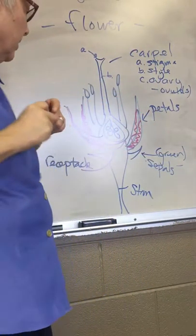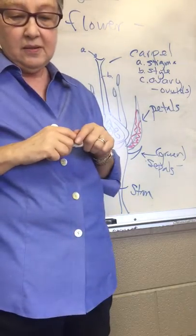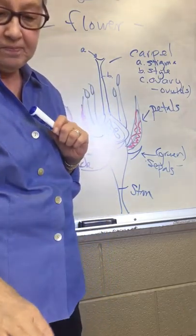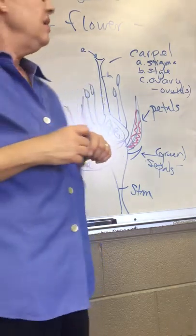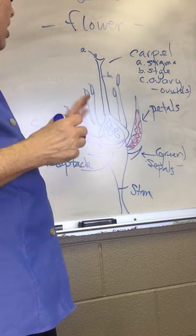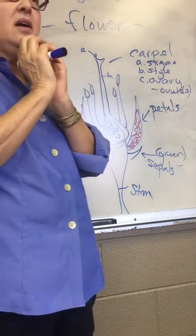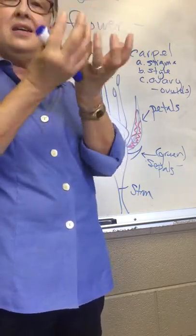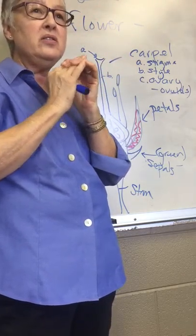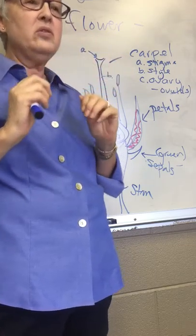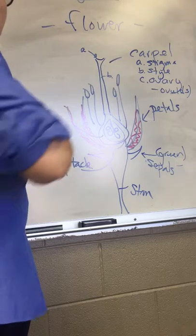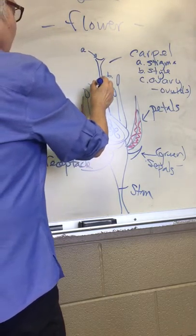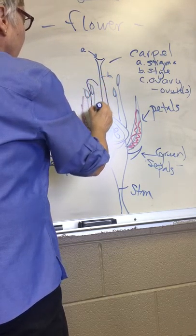The ovary contains one or more ovules, and within the ovules are the eggs. Now let's take a look at the male parts. The male parts are usually located outside of the female part, so it's kind of moving outward but within the petals and the sepals.